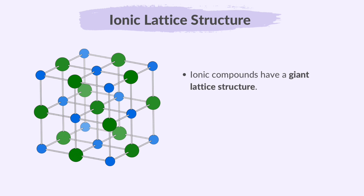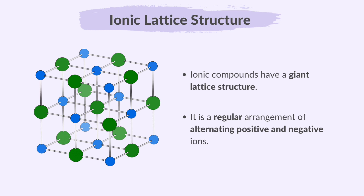Ionic compounds have a giant lattice structure. It is a regular arrangement of alternating positive and negative ions. Positive and negative ions take turns, creating a stable, chessboard-like pattern due to their attraction. It's like building a strong 3D crystal puzzle.